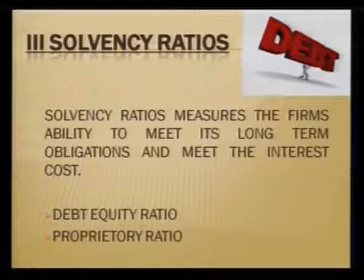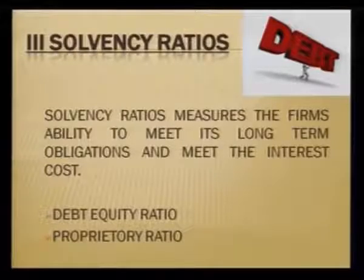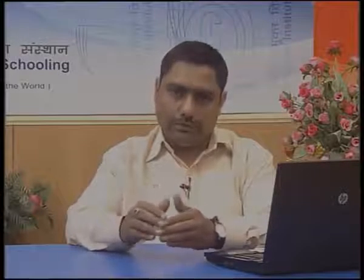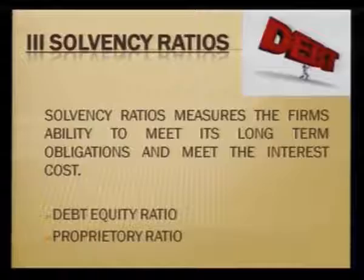The solvency ratio is calculated to know the ability of the firm to make its payments in the long term — that is, whether the firm will be in a position to make payment of its debts together with interest, well in time. This ratio covers two types: one is the debt equity ratio and the other is the proprietary ratio.